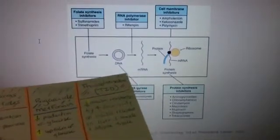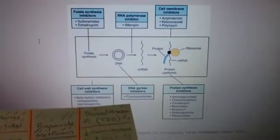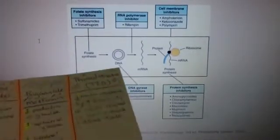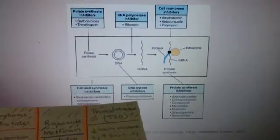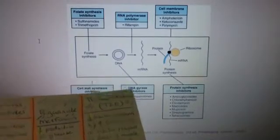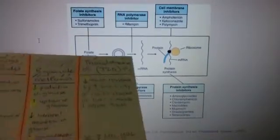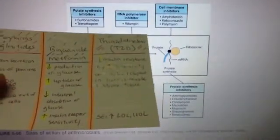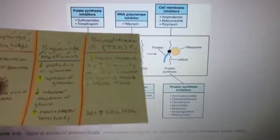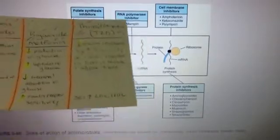We can see this process here. For DNA, gyrase inhibitors — fluoroquinolones. Then cell membrane inhibitors, for example amphotericin, ketoconazole, and polymyxin.